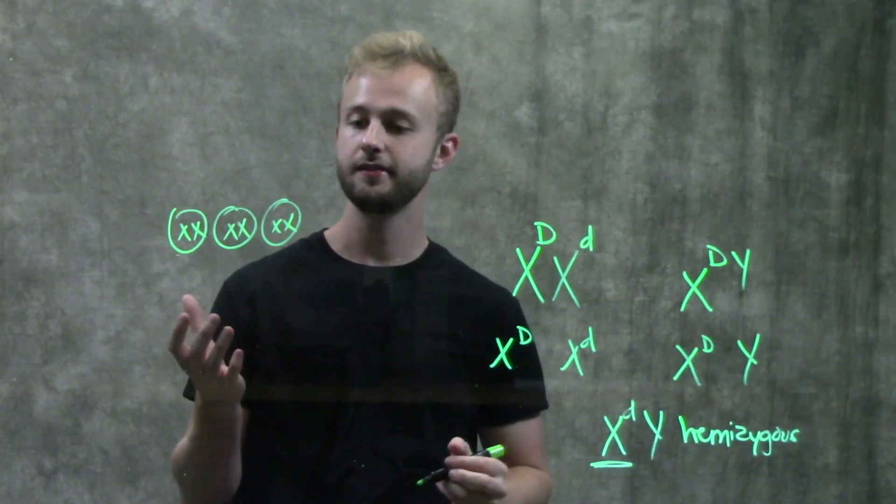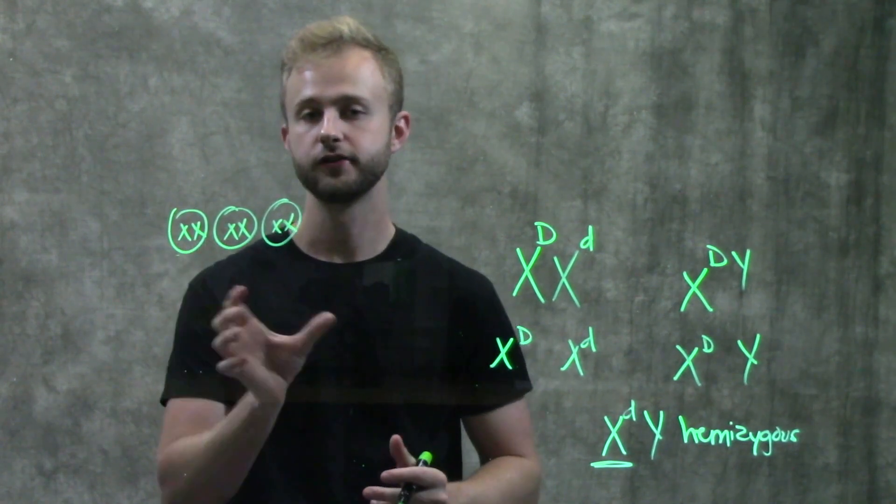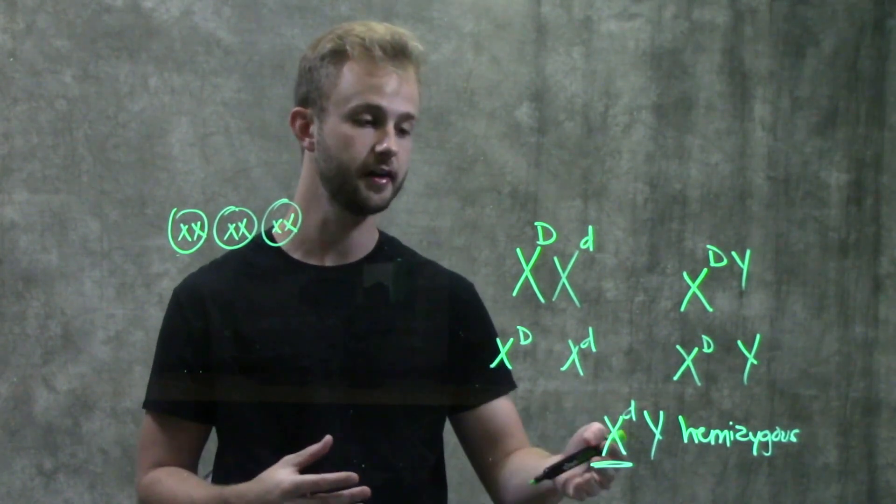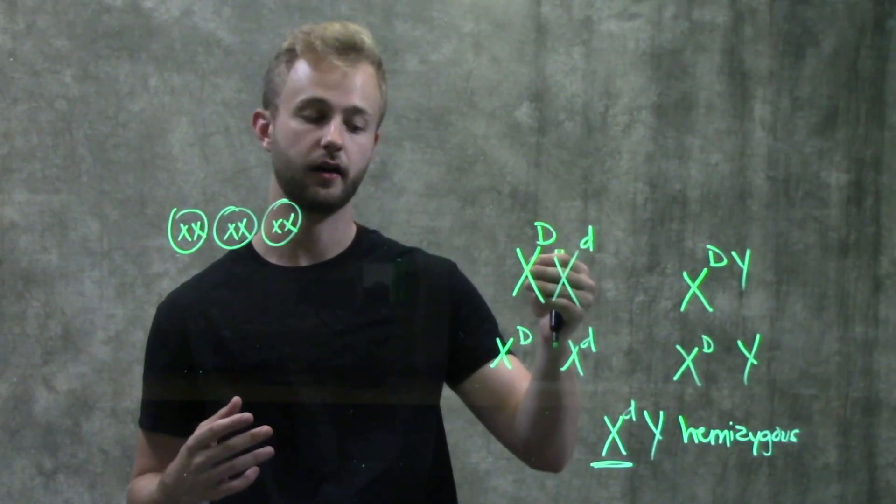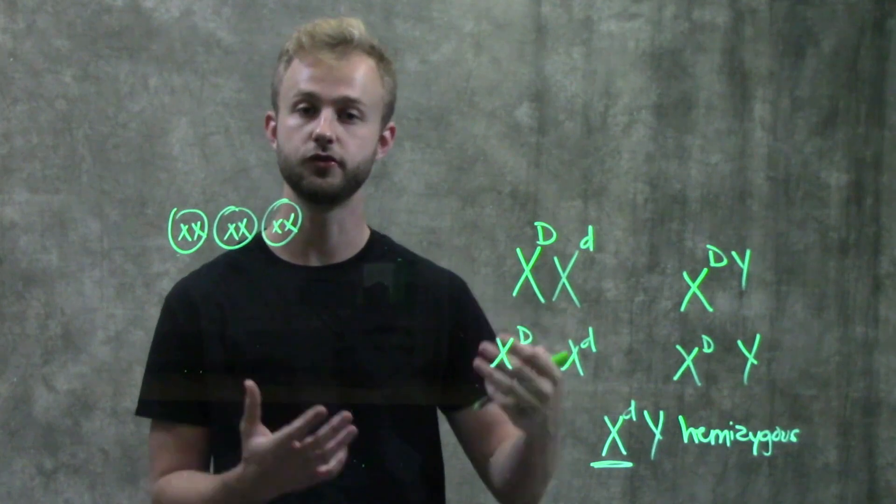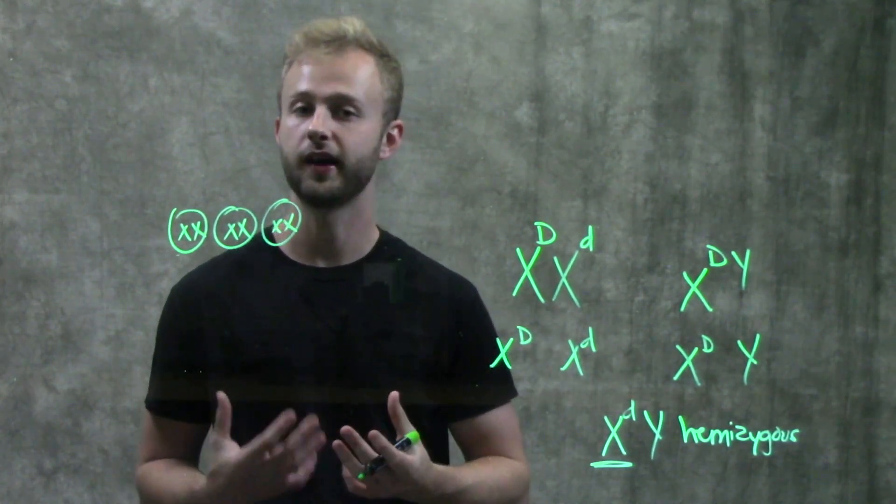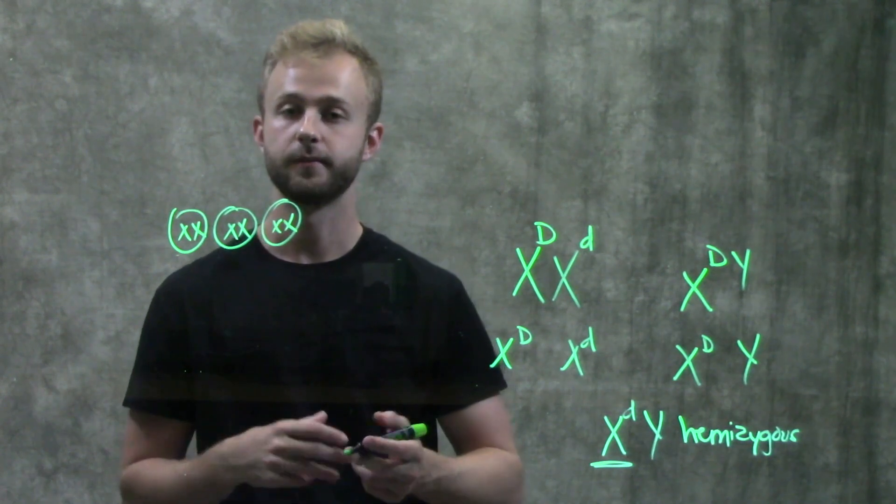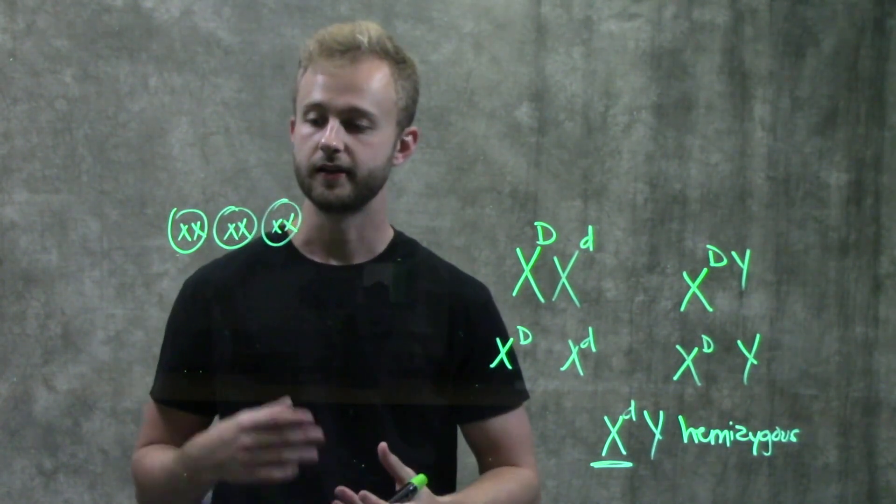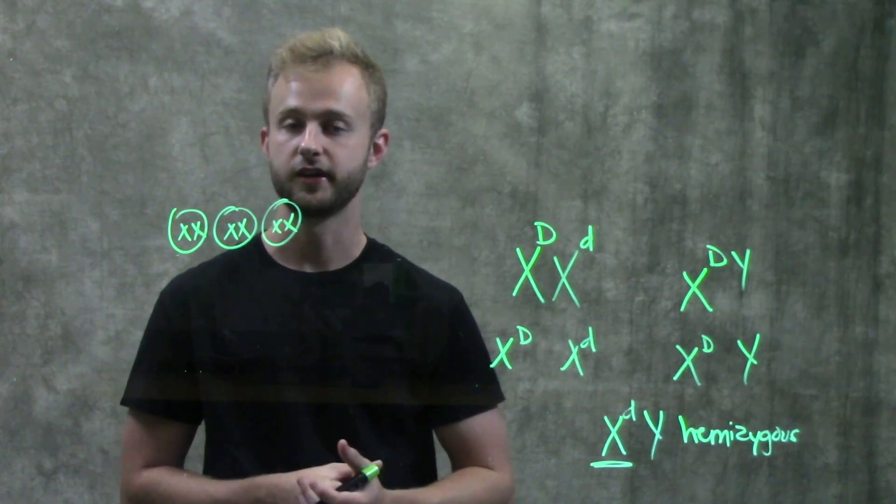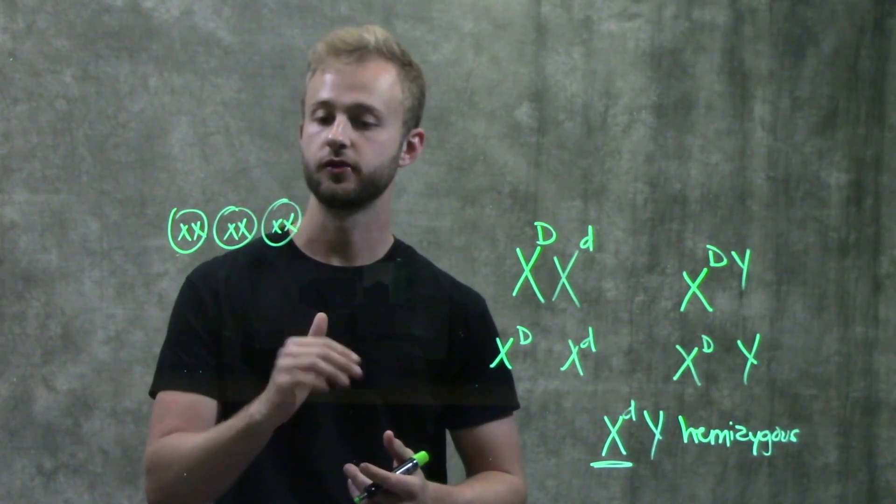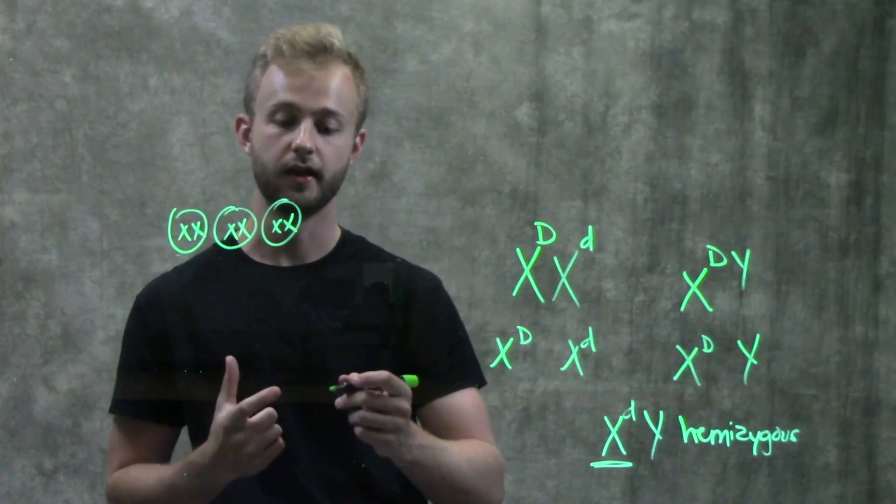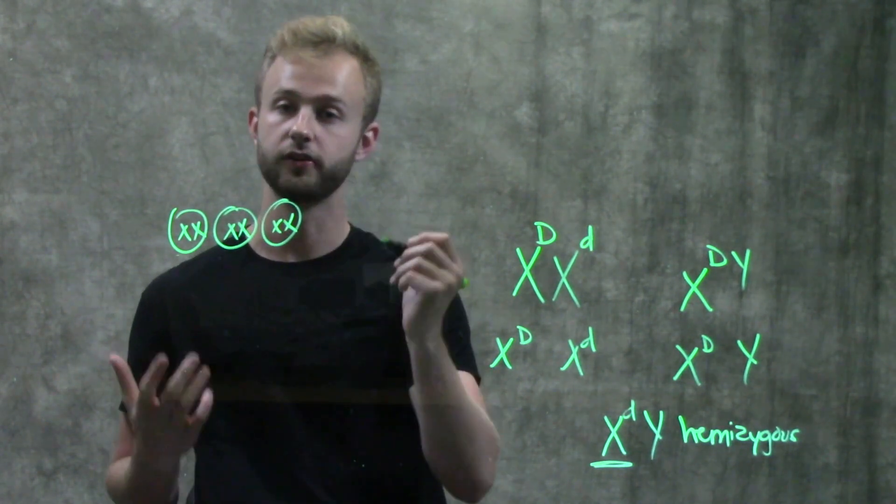And so it would be easy to think that the females then are going to have twice the amount of gene product for genes on the X chromosome as males, because males have one copy and females have two copies. So that's actually not what happens. So early on in embryonic development, we're going to have something called X inactivation take place. And so what's going to happen during X inactivation is that one of the X chromosomes in each of these cells is going to become inactive and it's going to get transformed into something called a bar body.